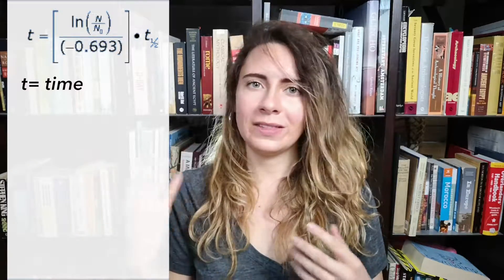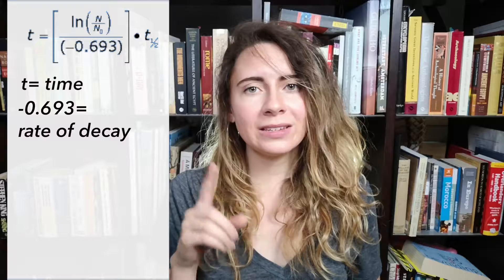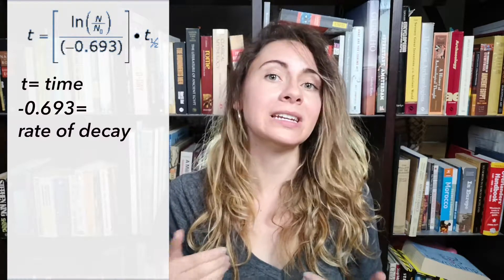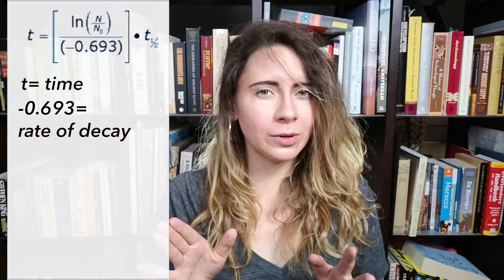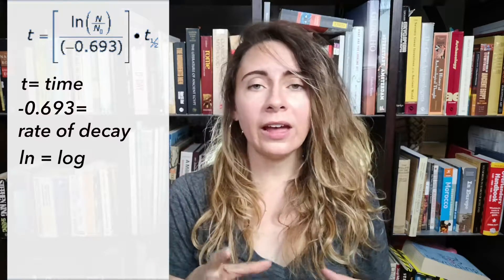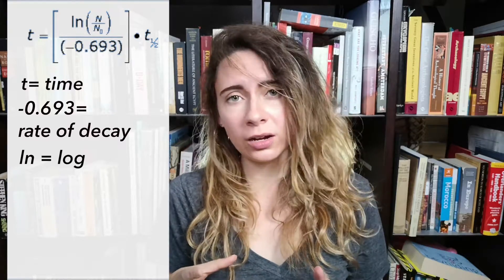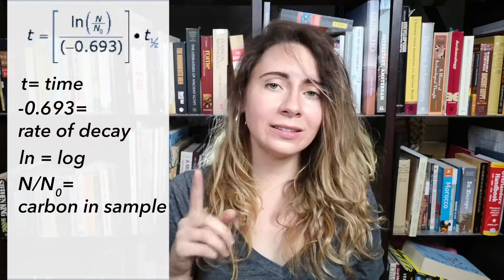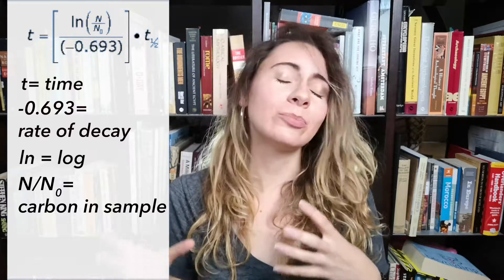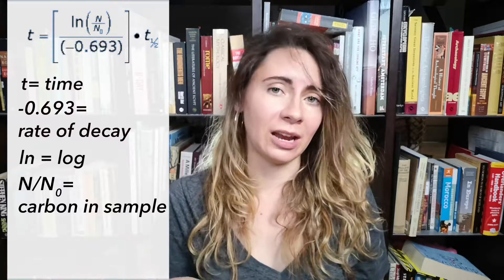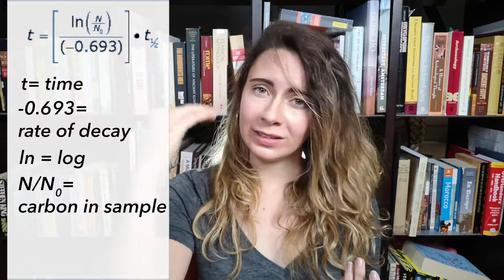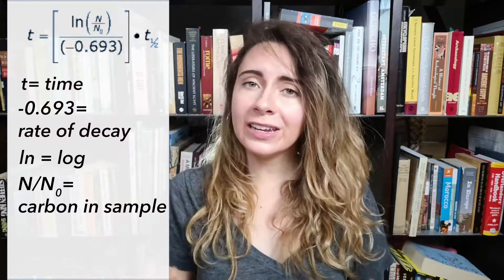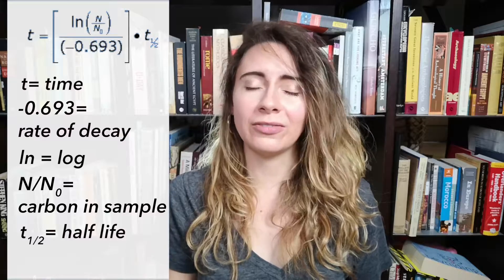The first t equals time — the date we're going to end up with. The minus 0.693 is the rate of carbon-14 decay. Don't think too much about this number, just accept it. The ln, of course, is the log function in your calculator, so that's already going to be done for you — you just have to hit that button. The N slash N-zero is the percentage of carbon left in the sample: the top N is always what's left and the bottom N is what was there to begin with. And finally, the t-half is the half-life of carbon.